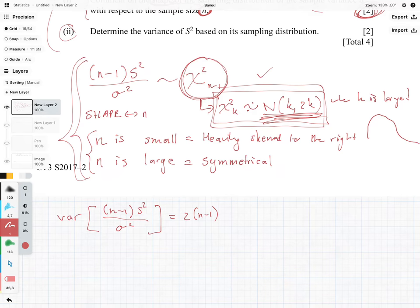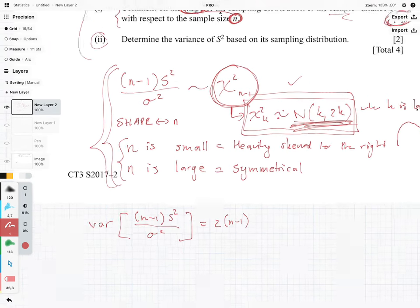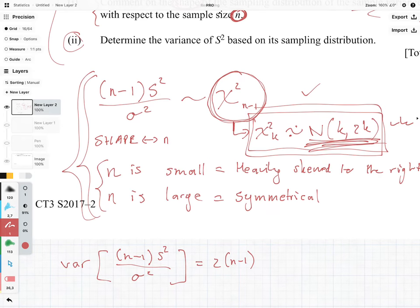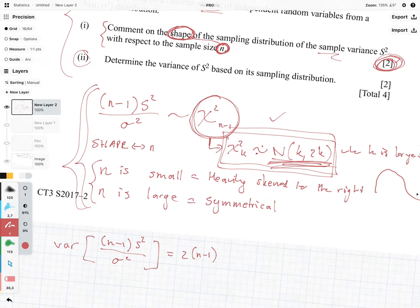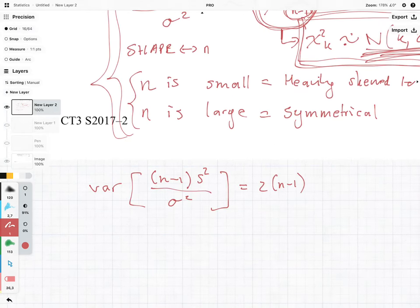Now how does that work out? Well, we know from over here that the variance of the chi-squared distribution is 2k, so it's these two degrees of freedom. So how are we getting this result?